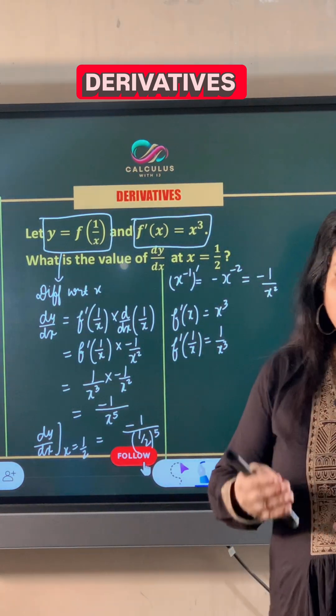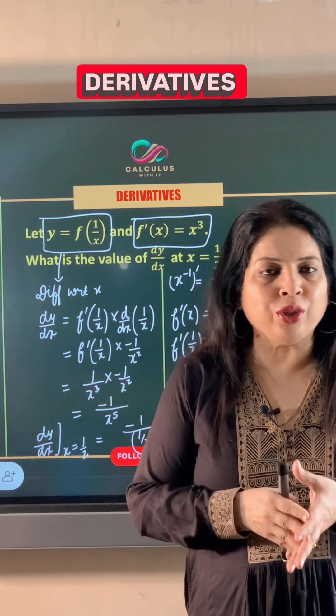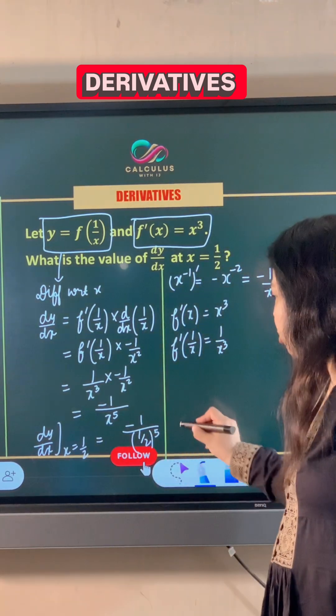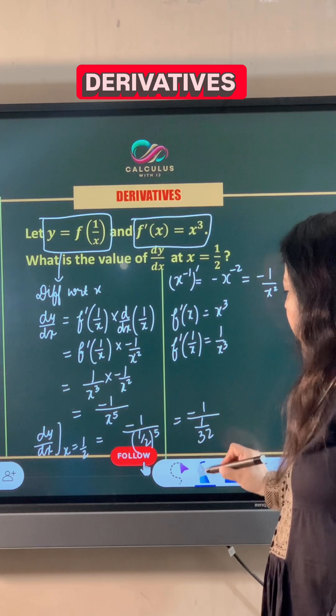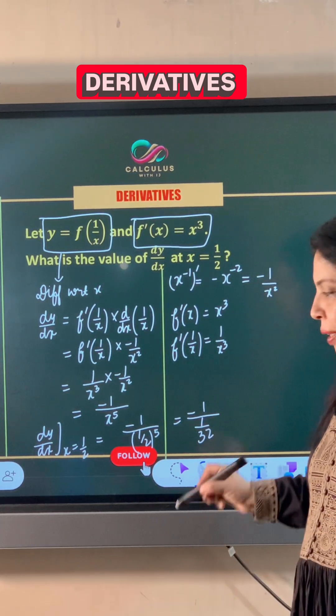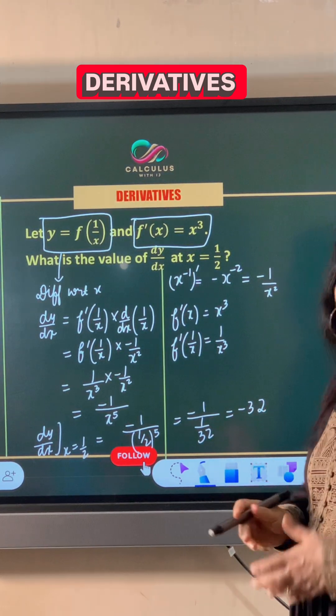2 raised to power 5 means 2 is multiplied 5 times, so that gives us 32. So this becomes negative 1 upon 1 upon 32. Now this 32 goes in the numerator, so the answer is negative 32.